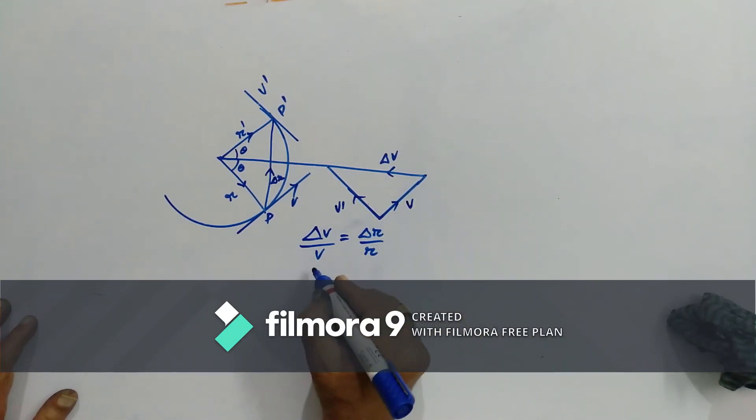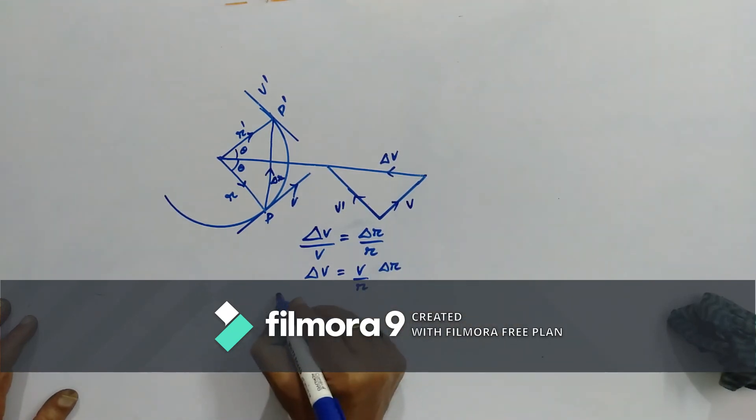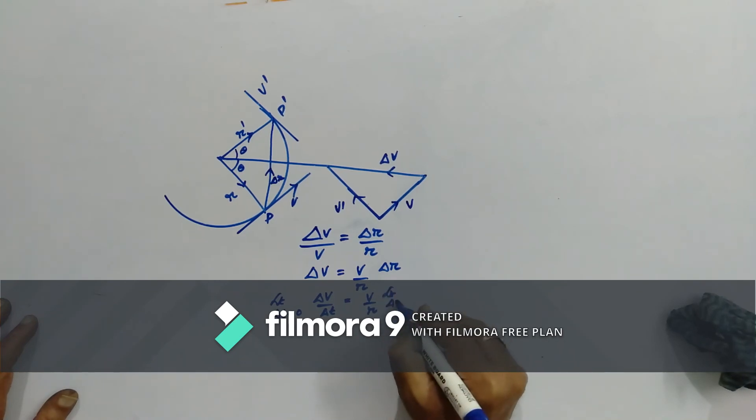Now, our aim is to get the acceleration. Therefore, we wanted to have delta V term. Now, let's take limits on both sides. Limit delta T tends to 0. Delta V by delta T is equal to V by R times limit delta T tends to 0 delta R by delta T.